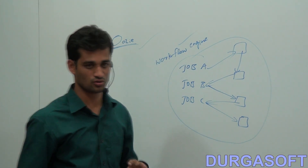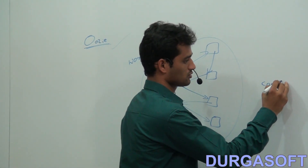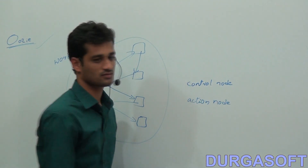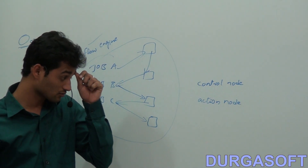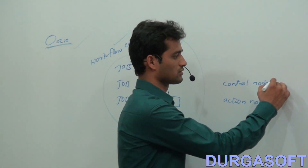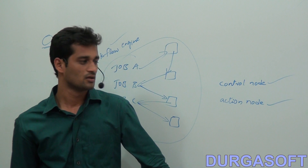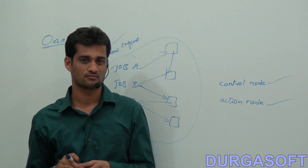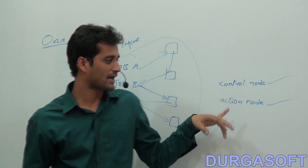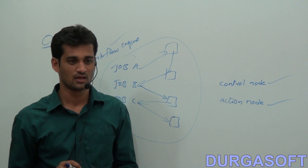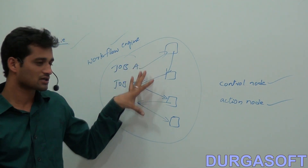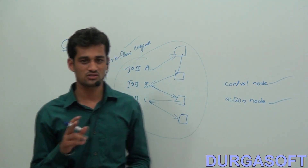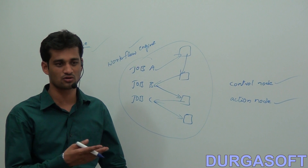In this workflow engine, you will have two types of nodes: one is a control node and the other is an action node. The control node takes care of from where the job processing should be started. The action node takes care of how to execute one job at a time. If you want to coordinate three jobs, you need three action nodes — one action tag per job.